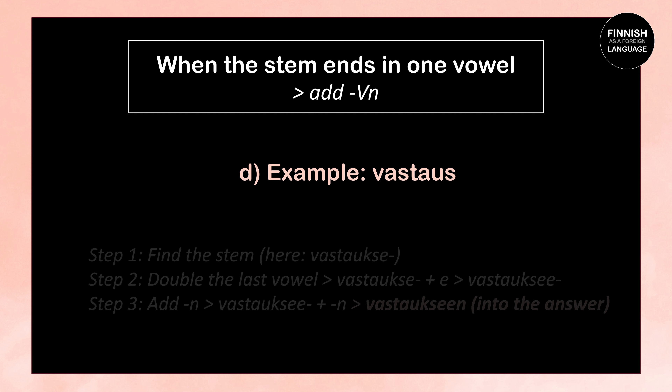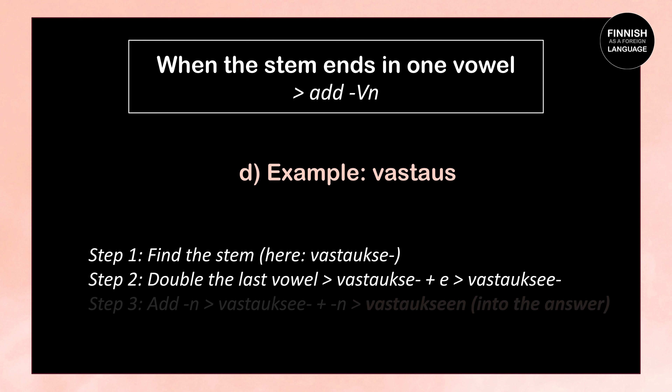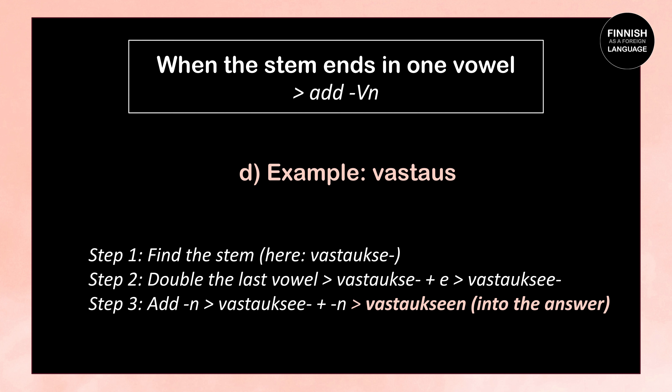Next: vastaus means answer. The stem is vastauke. We double the last vowel: vastauke + e = vastaukse. Then we add N: vastaukse + N = vastaukseen, which means to or into the answer.